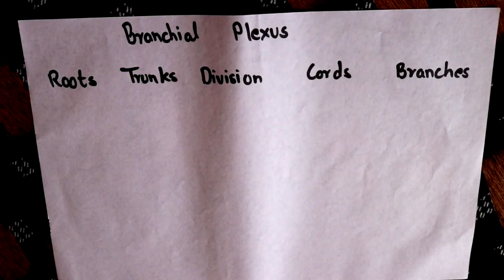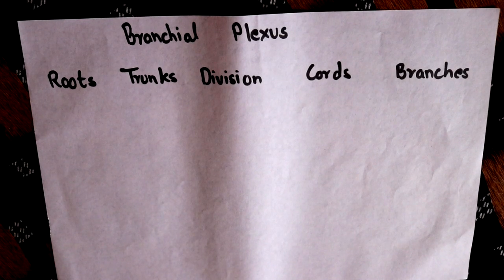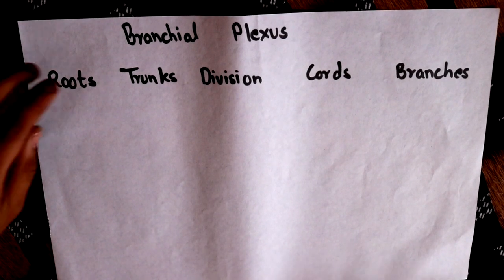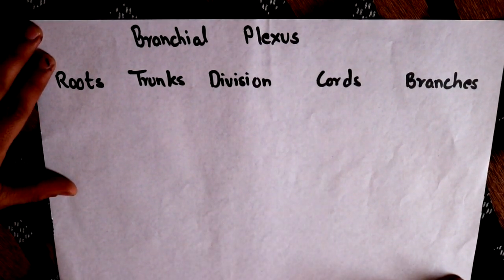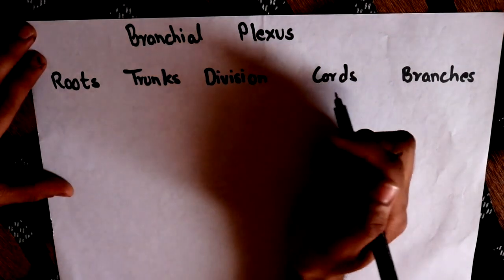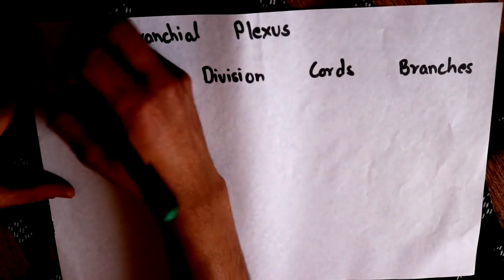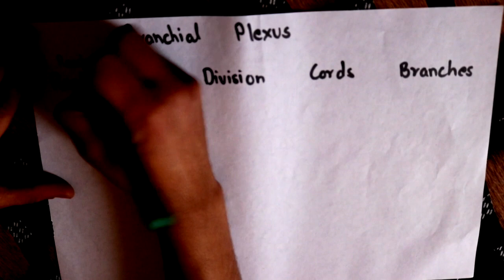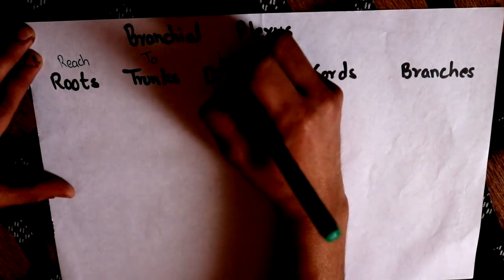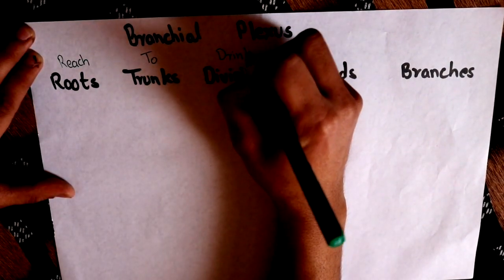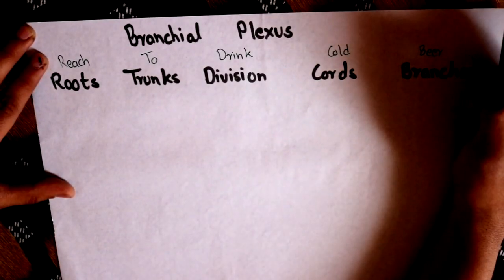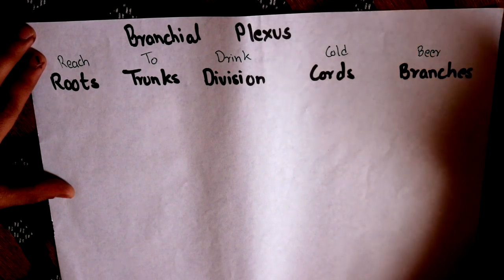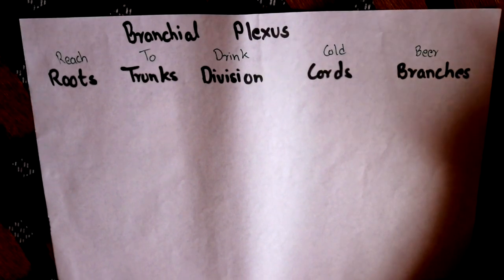This is the easiest possible way to remember the brachial plexus. The parts of the brachial plexus are roots, trunk, division, chords, and the branches. You can remember these parts by the mnemonic 'Reach To Drink Cold Beer.'